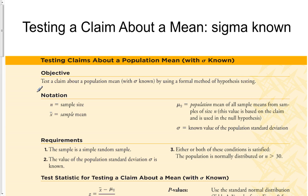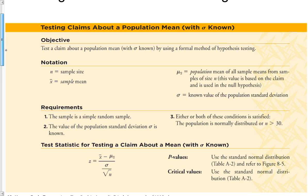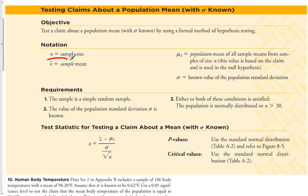This video is about testing a claim about a mean when sigma is known. The notation we're going to use: n is the sample size, x-bar is the sample mean, mu of x is the population mean of all sample means for samples of size n — the same population mean used for the central limit theorem. Sigma is a known value of the population standard deviation.